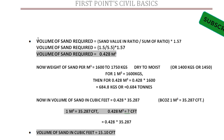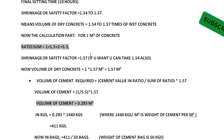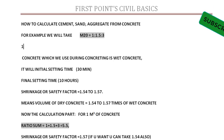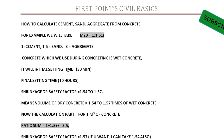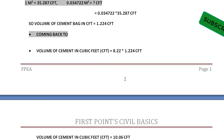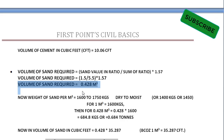Now we'll calculate the volume of sand required. The formula is: sand value in ratio divided by sum of ratio, multiplied by 1.57. In the ratio 1:1.5:3, the sand value is 1.5 and the sum of ratio is 5.5. So volume of sand = (1.5 / 5.5) × 1.57 = 0.428 cubic meters.